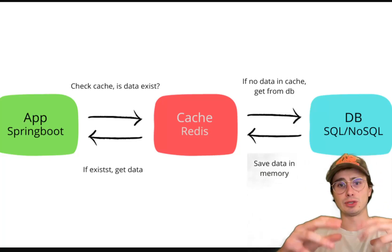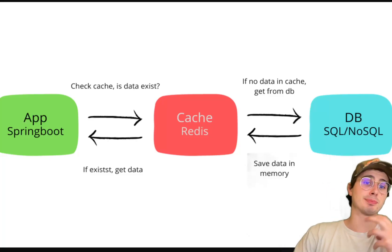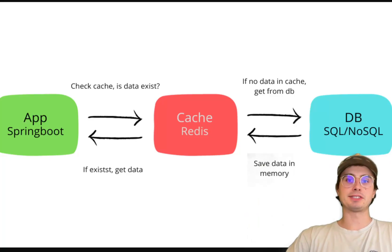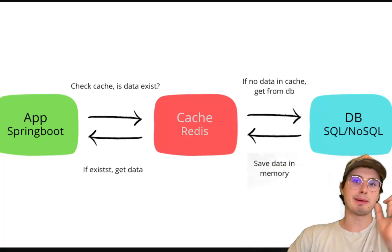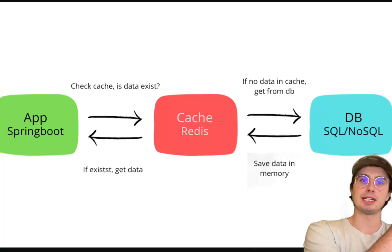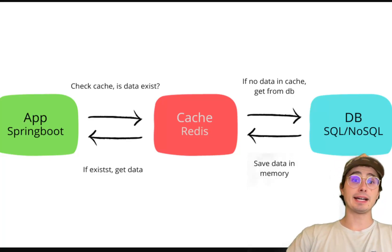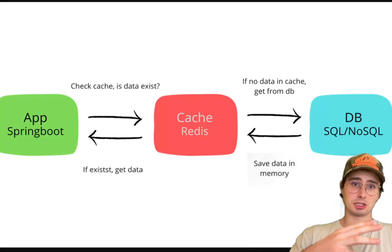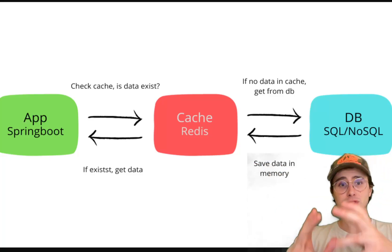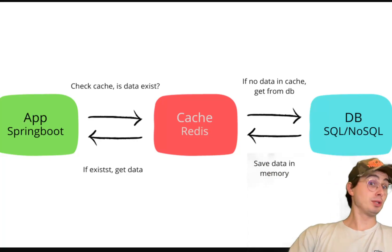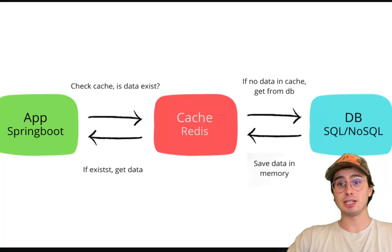Redis supports operations like string operations for storing and manipulating text or binary data, list and set and hash management with insertion, deletion, and range queries. For pub/sub messaging use cases, Redis can function as a message broker similar to how Google Pub/Sub operates, transiting commonly used messages between a back-end database and whatever application is serving as a front end. Data is accessed by keys, which can be manually assigned, and Redis supports atomic operations, making it suitable for high-performance use cases.